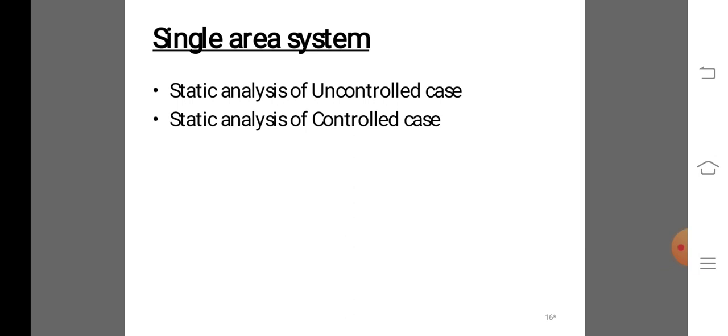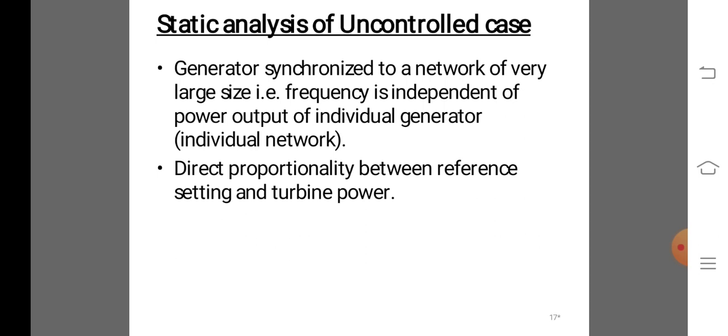This changes the speed set point. The system contains two classifications: static analysis of uncontrolled case and static analysis of controlled case. First, in the static analysis of uncontrolled case, a generator is synchronized to a network of very large size where frequency is independent of power output of individual generators.